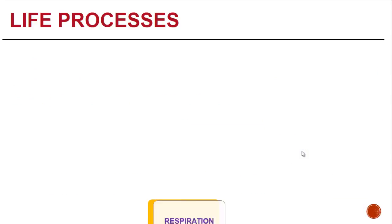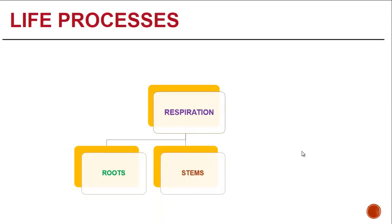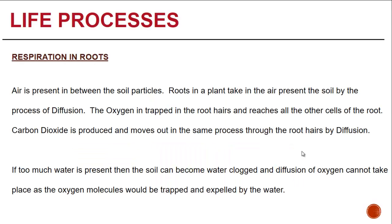Let's look at a diagram of respiration in roots, stems, and leaves. Respiration in roots: soil has particles with air trapped in between them. The roots of a plant take in the air present in the soil by the process of diffusion. The oxygen that is trapped in the root hairs reaches all the other cells of the root.